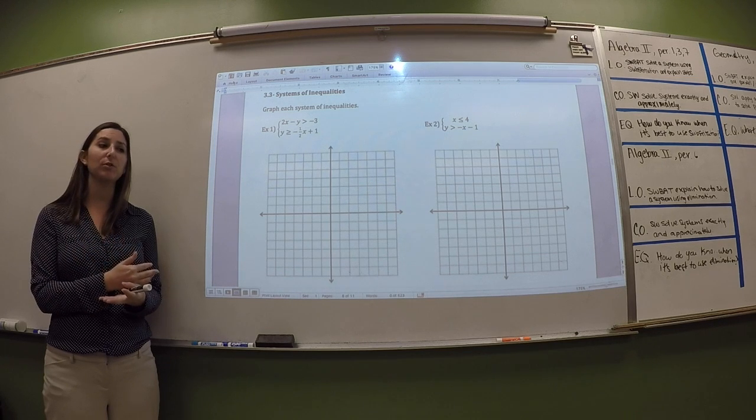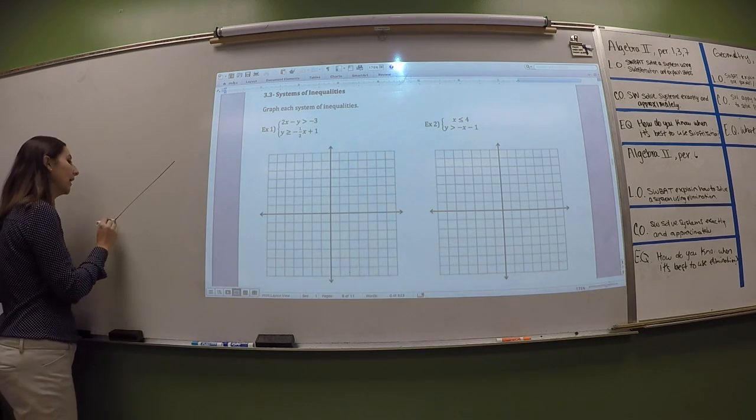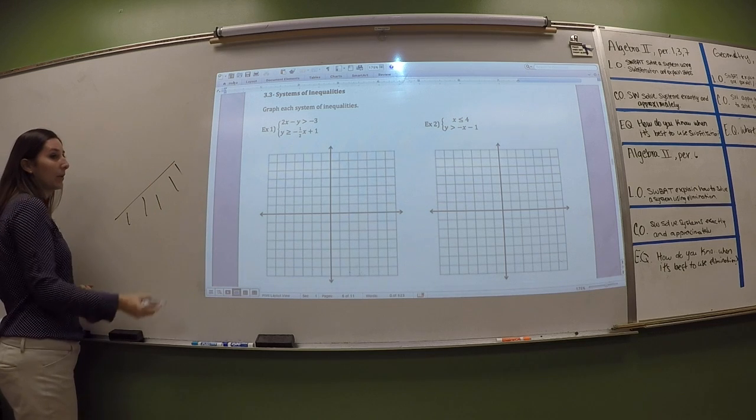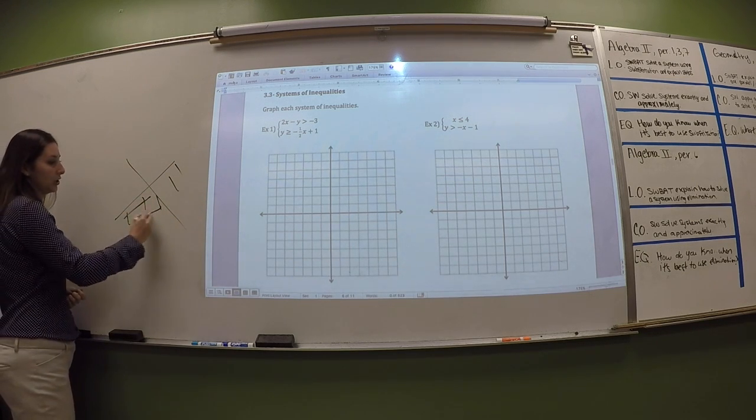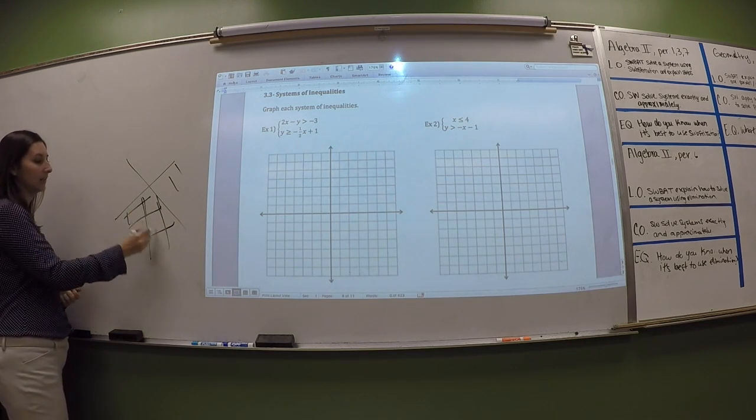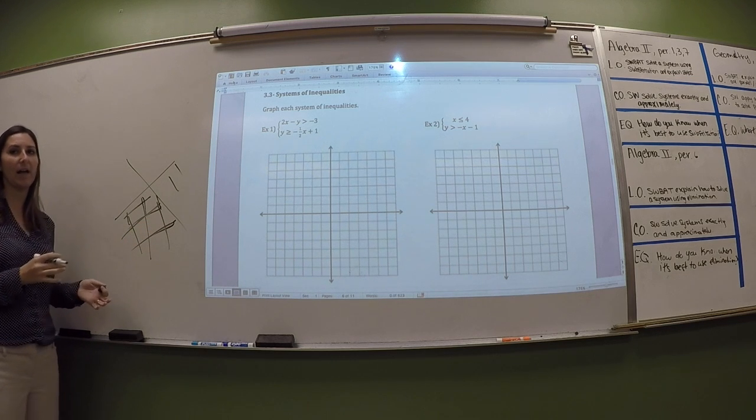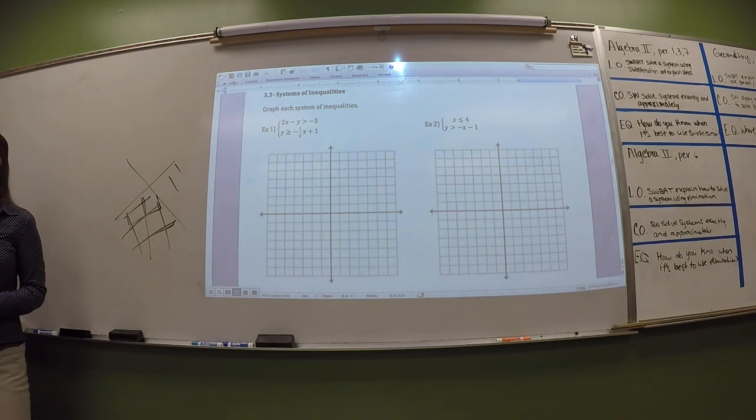If you remember from chapter 2, with inequalities, you graph a line and then you shade. So now we're going to graph another line and we're going to shade and then the area where we shaded both, that's your solution set. So it's like your double shaded region.